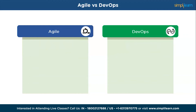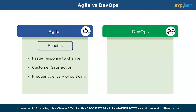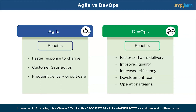Let's have a look at the benefits of Agile and DevOps. Agile enables faster response to change, improved customer satisfaction, and early and frequent delivery of working software. Whereas DevOps facilitates faster software delivery, improved quality through automation and testing, increased efficiency, and better alignment between development and operations teams.